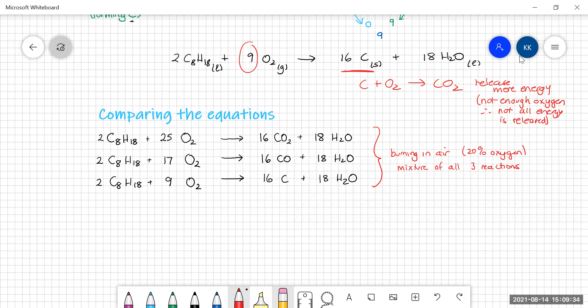You can actually overcome this incomplete combustion problem by either burning in pure oxygen. Now, that's not particularly useful for a car engine. We don't feed pure oxygen to a car engine, we burn in air. But these days, the fuel is injected into the cylinder as a very fine spray in very controlled amounts to make sure that you get the maximum possible complete combustion occurring, and you really, really minimize the incomplete combustion.